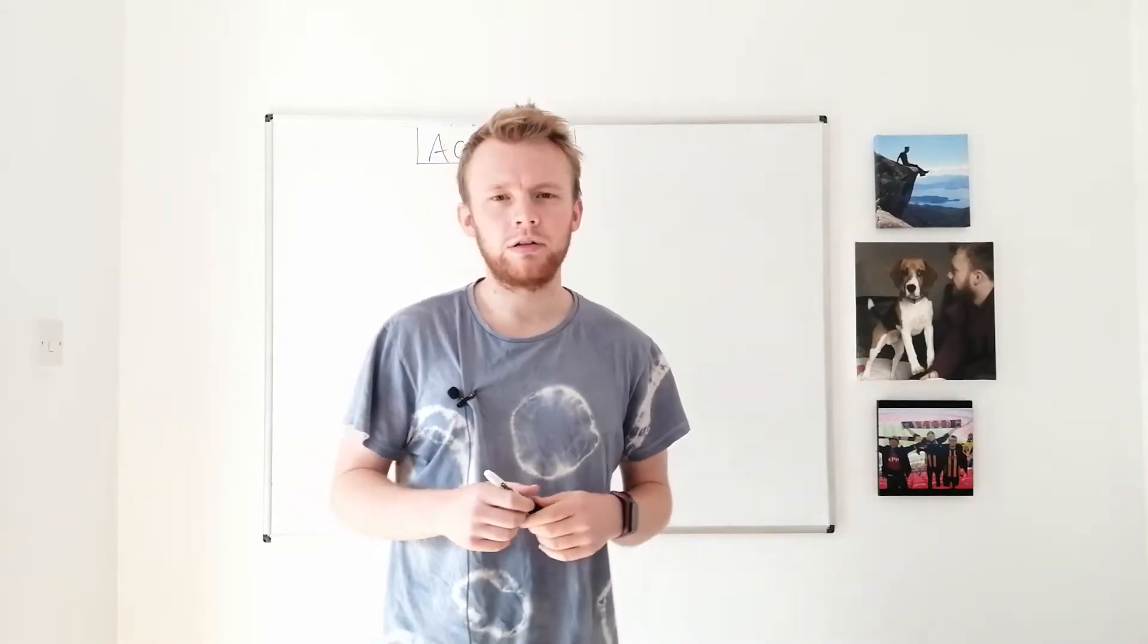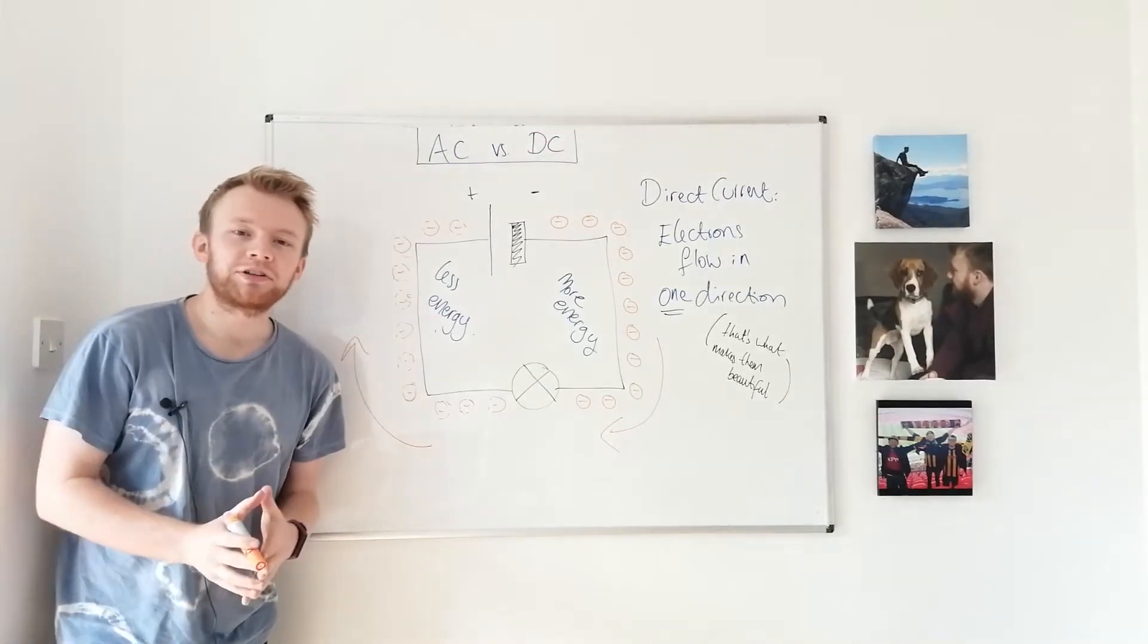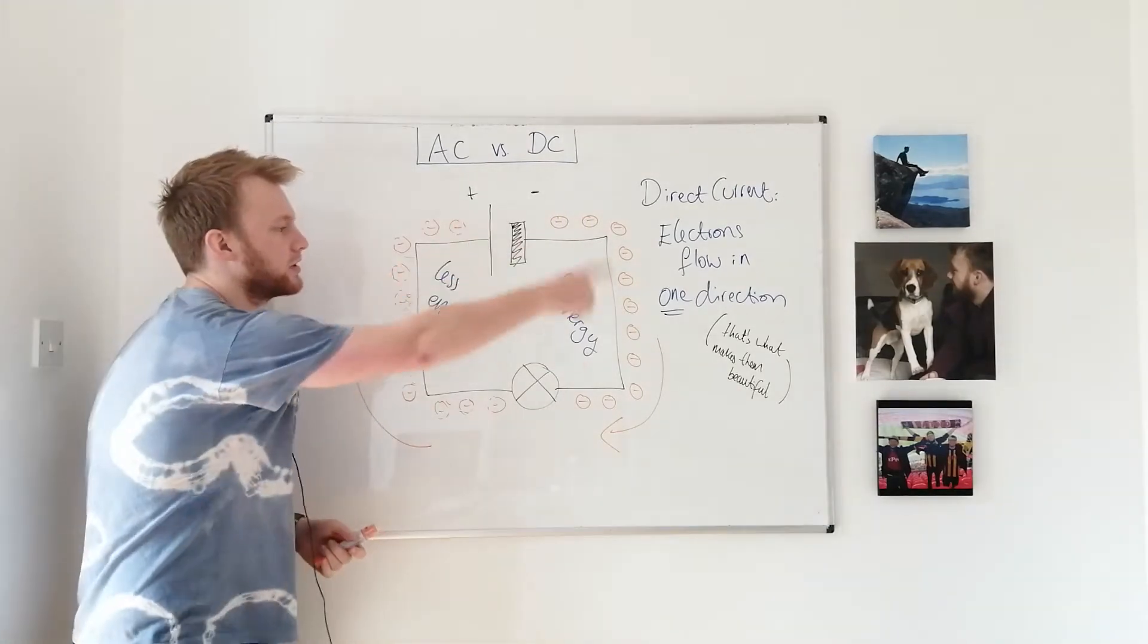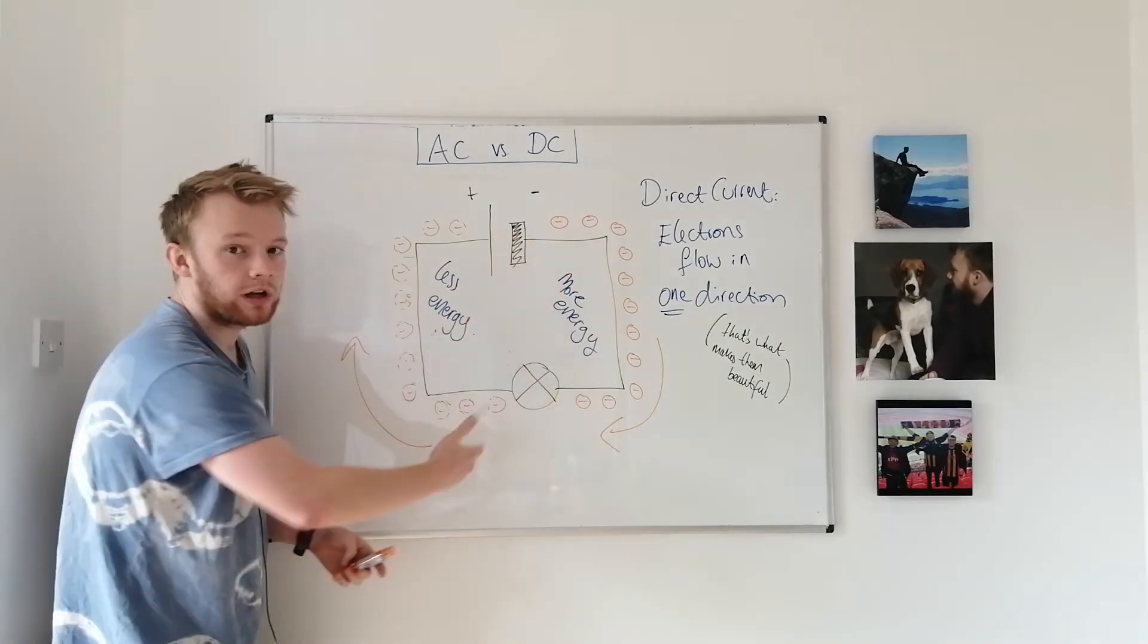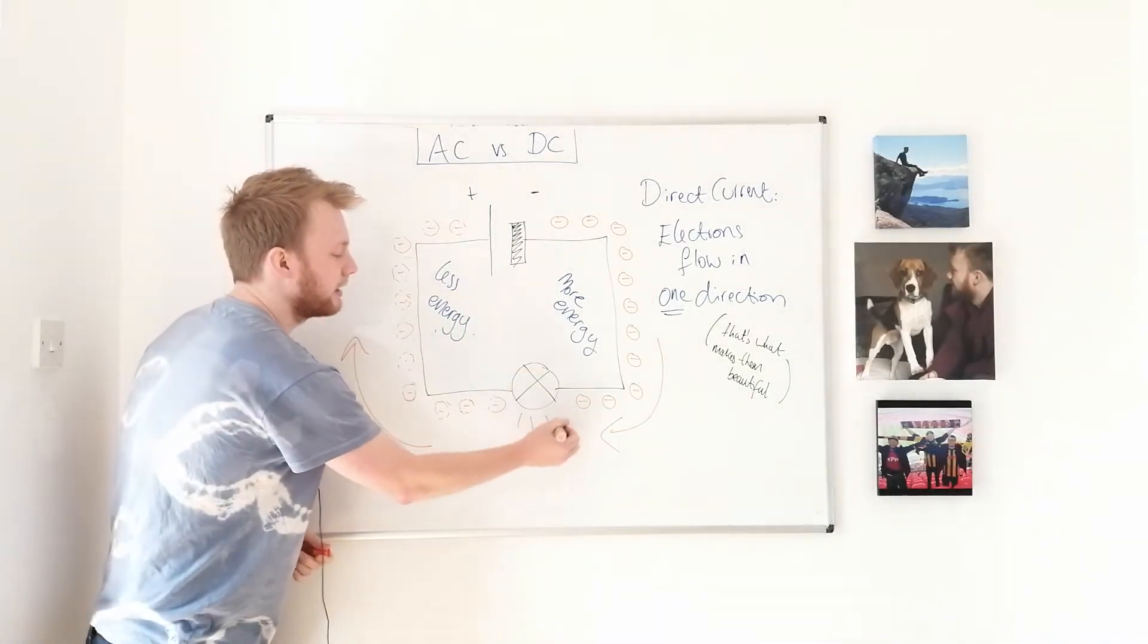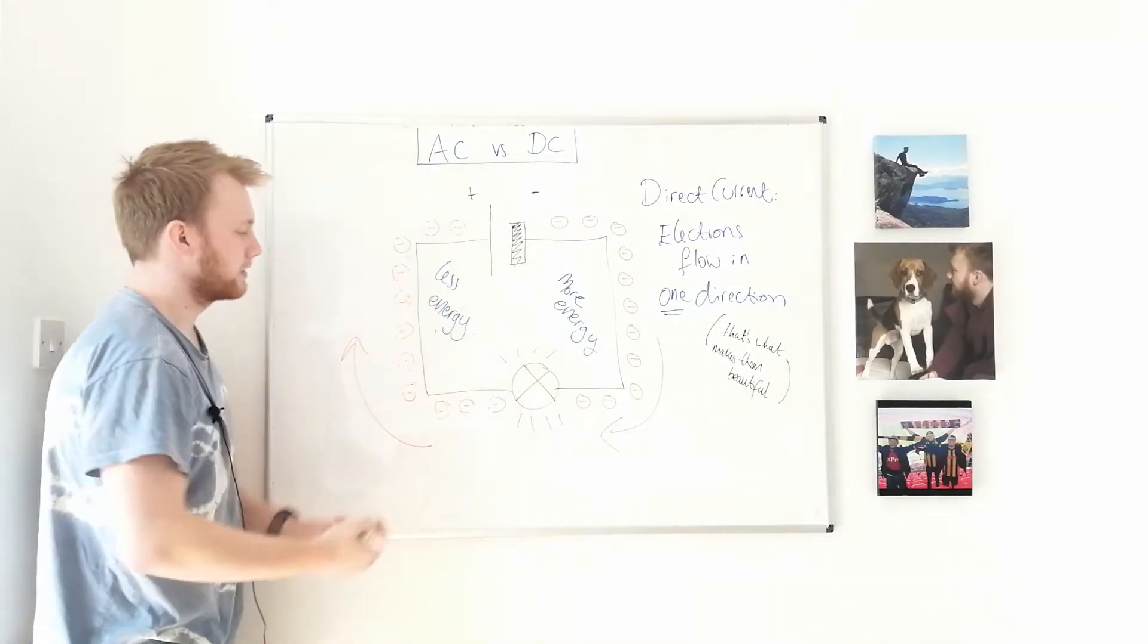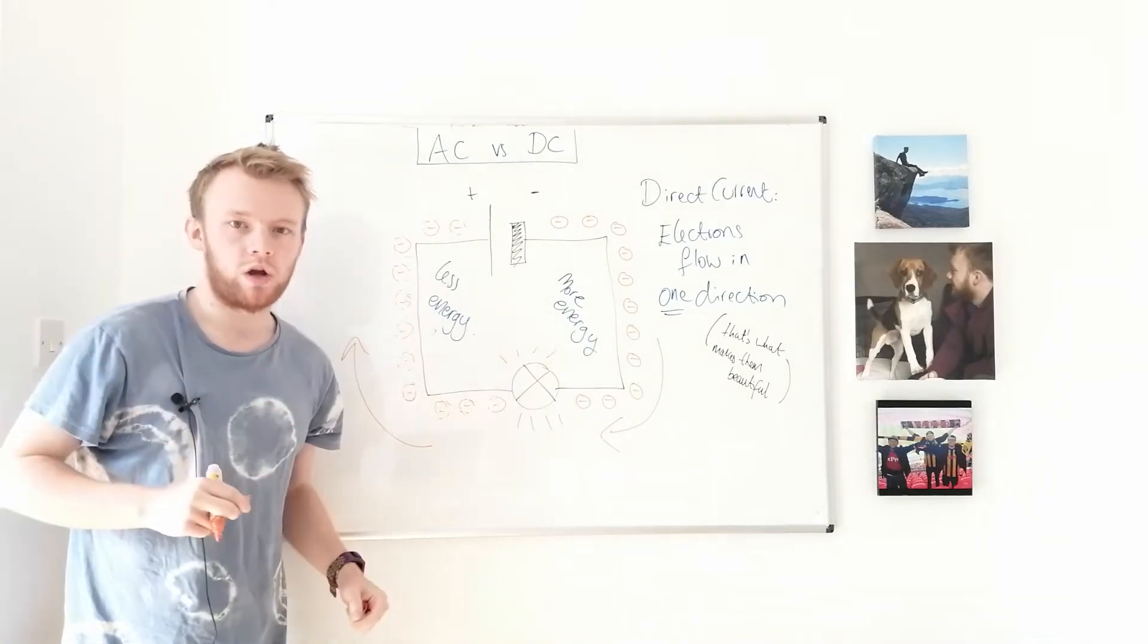Before we get into that we're going to look at exactly what direct current and alternating current is. In direct current the electrons flow around the circuit from the negative terminal to the positive terminal in one direction constantly the same way. Before they reach a resistive load in the circuit the electrons have more energy and after they've transferred energy to for example a bulb they will have less energy on this side of the circuit. Direct current electrons flow in one direction only.